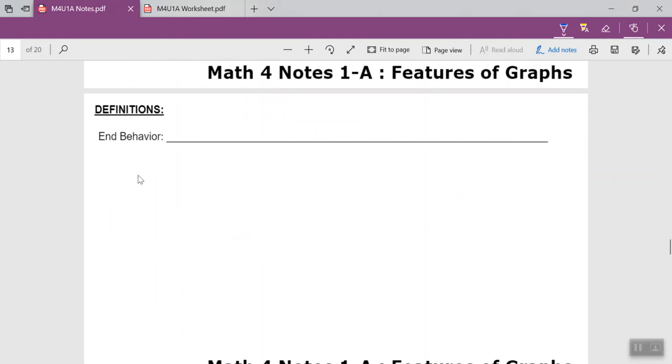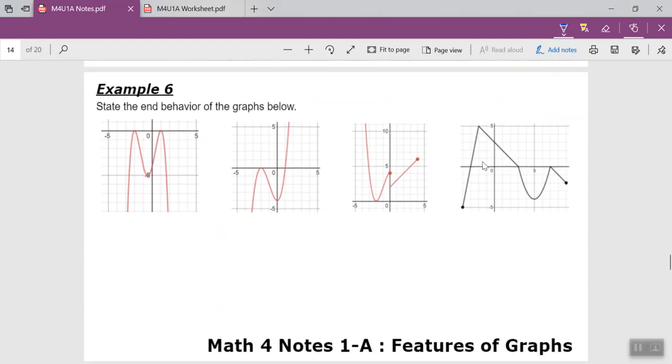End behavior. This one's a tough one to describe. As x approaches negative infinity, what is y doing? As x approaches positive infinity, what is y doing? And, you know, that is probably not a very clear definition, but that is the crux of the matter. That is what you need to know. And so there are going to be two statements, usually when they ask about end behavior. What happens as x disappears off the left side of the graph? What's y doing? And what happens when x disappears off the right side of the graph? What's y doing? Is it going up or down, or is it converging on some number?